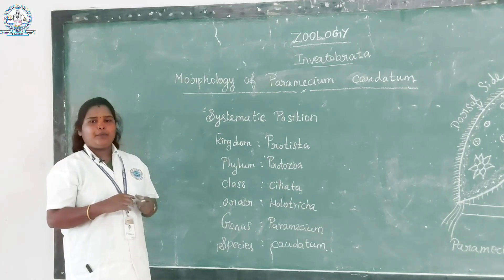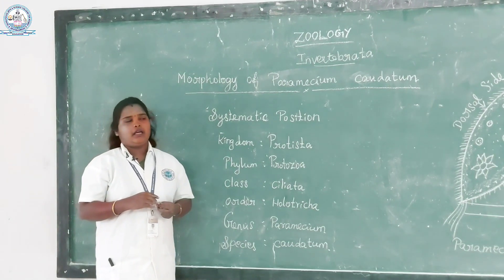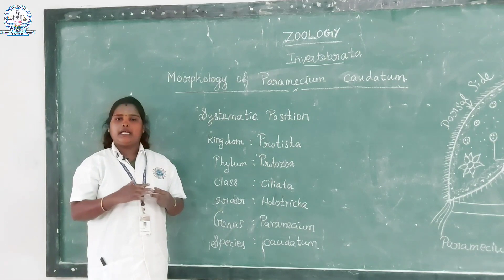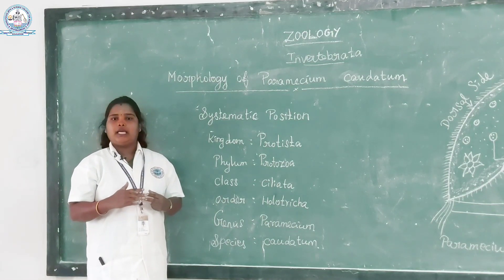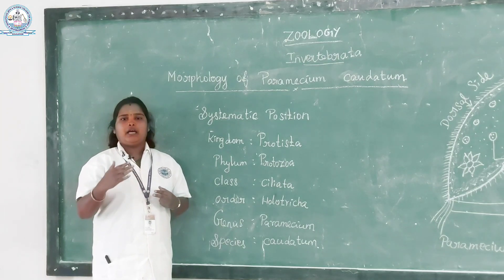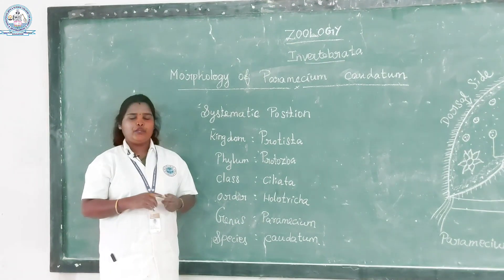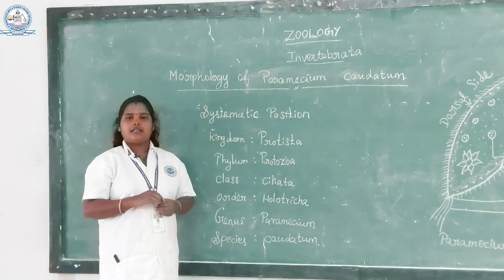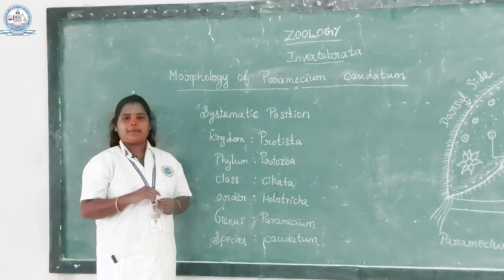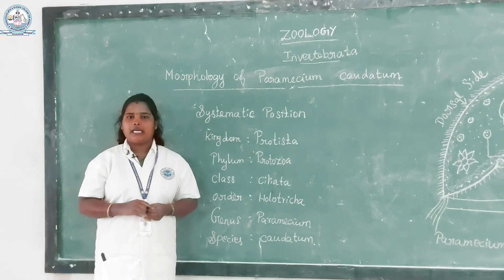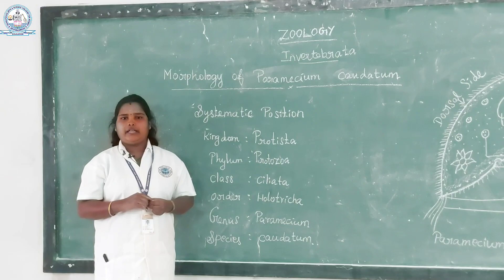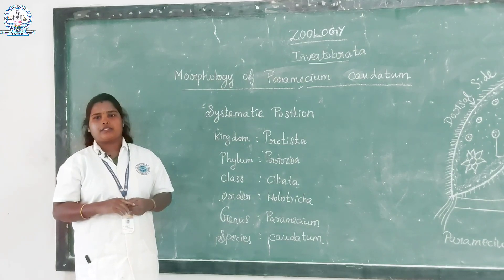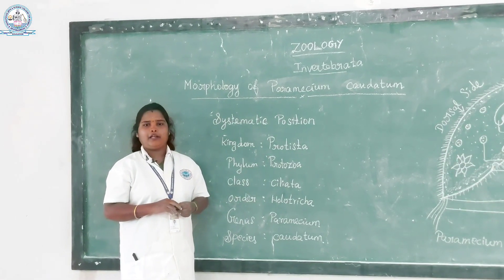Pseudopodia — pseudo means false and podia means legs — are present in Amoeba. When Amoeba moves from one place to another, the pseudopodia come out, and after locomotion they disappear. Regarding nutrition, protozoans feed on diatoms, phytoplanktons, and zooplanktons. They are holophytic or holozoic, saprotrophic, or somehow parasitic in nutrition. Digestion is carried out by intracellular digestion. Respiration and excretion are done by contractile vacuoles. These are some of the general characters of Phylum Protozoa.